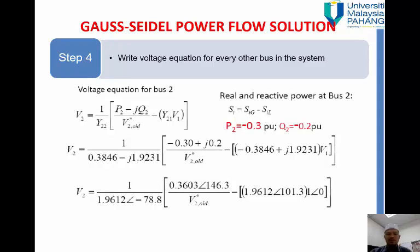For every other bus. So we start with bus two since our bus one is the reference, so we start with bus two V2. So if you have four buses, so we start bus two and then bus three bus four. Okay, so now it's bus two only. So we just apply the equation one over Y22, Y22, Y22 is the diagonal of the Y bus. Your P2 minus jQ2 divided by V2, V2 is the initial value.